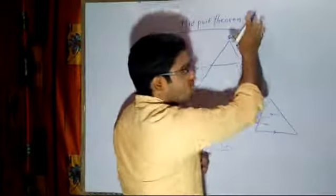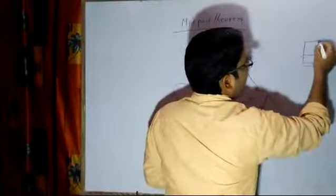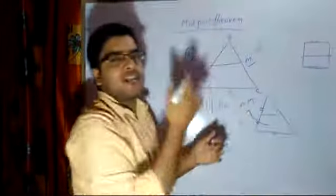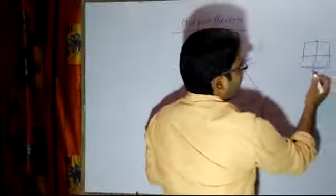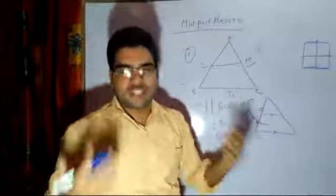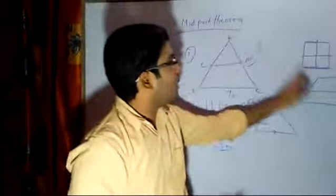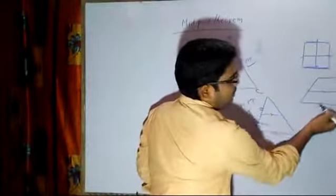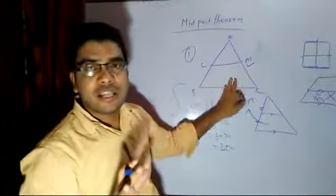One more thing: midpoint theorem is only applicable in case of a triangle. If you have any square and they say these two are midpoints and ask you to prove that this side is equal to half or certain values, you cannot apply midpoint theorem. If you have a rectangle or a trapezium and they give you a midpoint where this line is joining, you cannot say that this line will be parallel to this, and you cannot say that this line will be half of this. The only case where you can apply midpoint theorem is in case of a triangle.